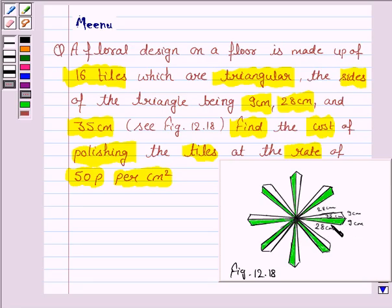we will first find the area of 16 such tiles and then multiply with the area of 16 such tiles by the cost of polishing the tiles, which is given to be 50 paisa per cm².